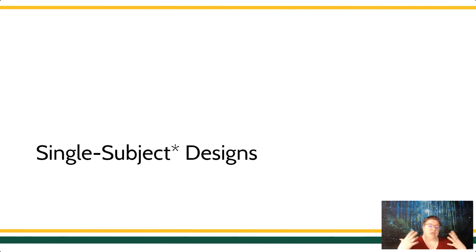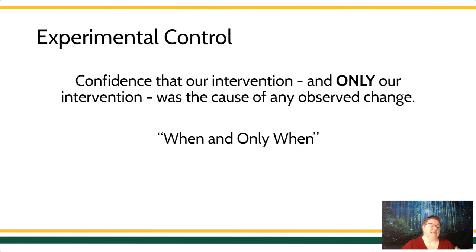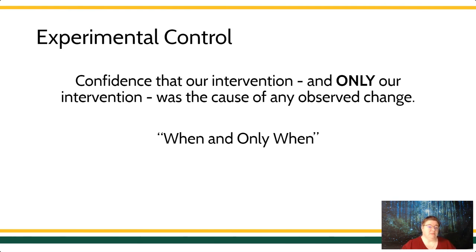When we're talking about experimental control, that's our confidence in the cause-effect relationship of our intervention — that we are confident that our intervention, and only our intervention, not some extraneous variable, not some third variable, was the cause of that change we saw in the dependent variable. Another way of saying this is that the behavior changed when and only when the independent variable was put into place. Experimental control essentially means the behavior changes when and only when the independent variable is put into place.